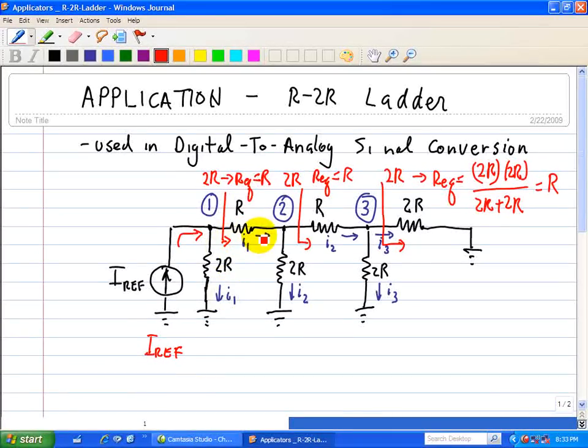So I1 here and I1 here are the same currents because of what we just analyzed in terms of equivalent resistance. So I1, this implies that I1 is half of I reference.